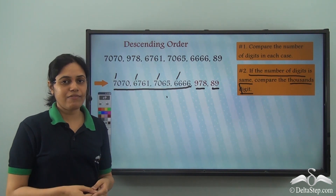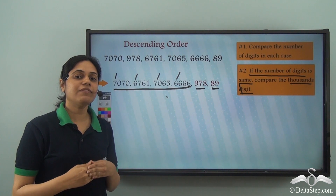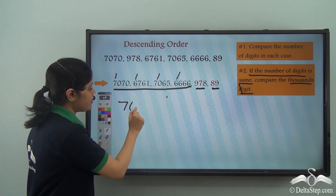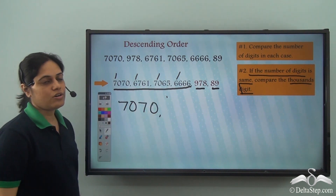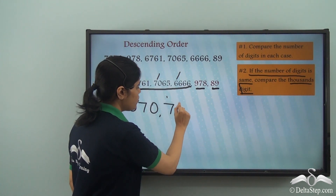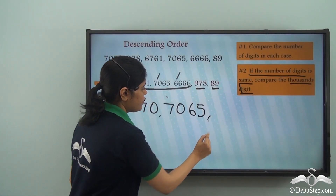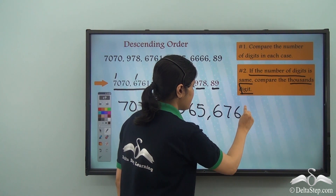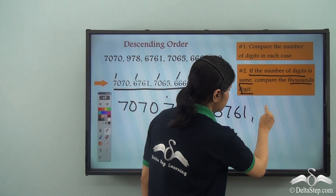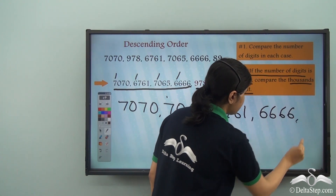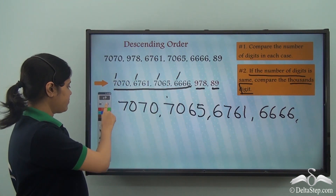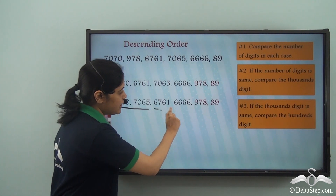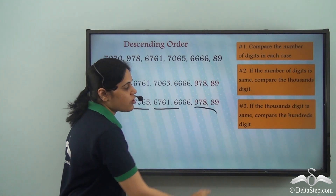So the numbers starting with seven will be greater than the numbers starting with six. First I write the numbers starting with seven: 7070, then 7065, then the numbers starting with six: 6761 and 6666, and then the three-digit and two-digit numbers. So the numbers starting with seven come first, then the numbers starting with six.